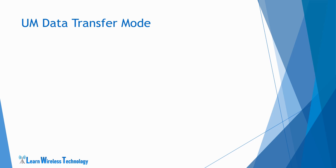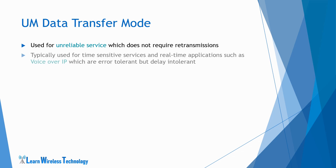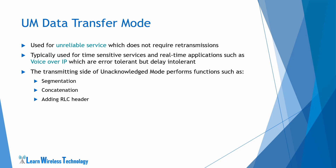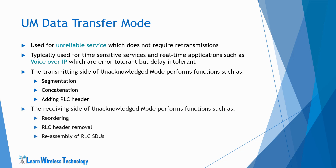Next is unacknowledged mode data transfer. The unacknowledged mode is also used when using an unreliable service which does not require retransmissions. This mode is typically used for time-sensitive services and real-time applications such as Voice over IP or VoIP, which are error-tolerant but delay-intolerant. For services like VoIP, some transmission error may be acceptable but delay is not, since it is a real-time service. For data transfer, the transmitting side performs segmentation, concatenation, and adding an RLC header, while the receiving side performs reordering of received RLC PDUs, RLC header removal, and reassembly of RLC SDUs.